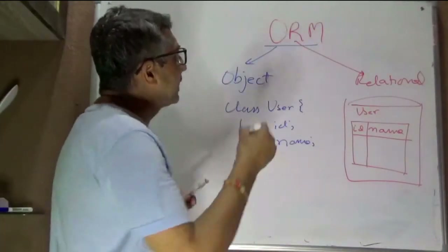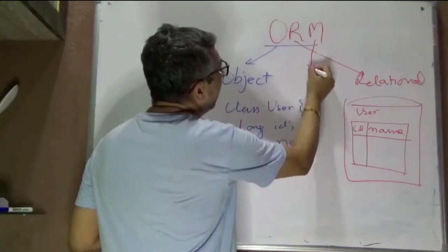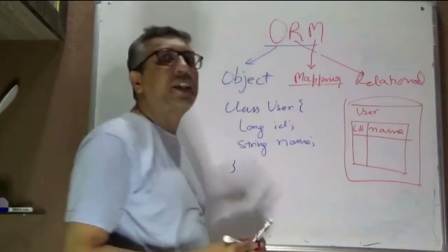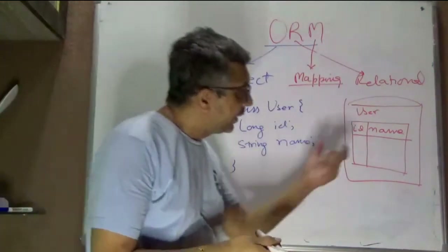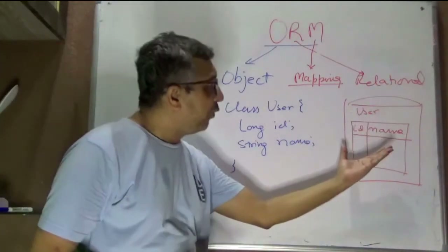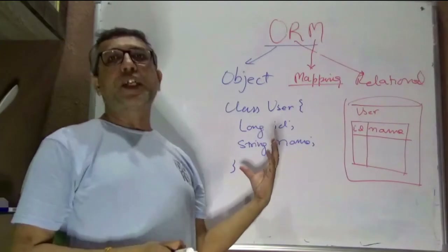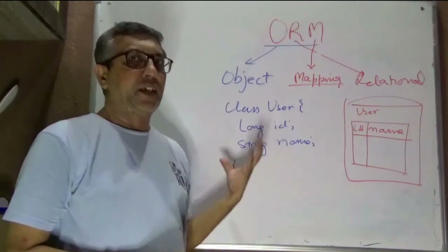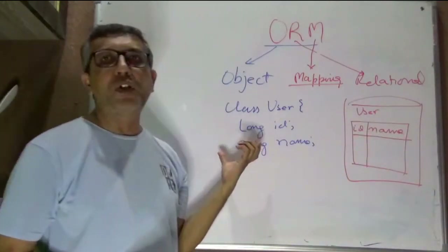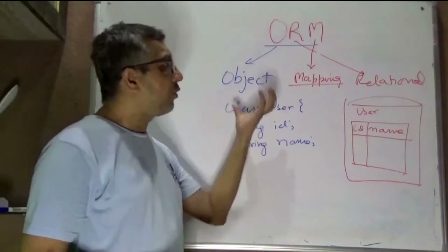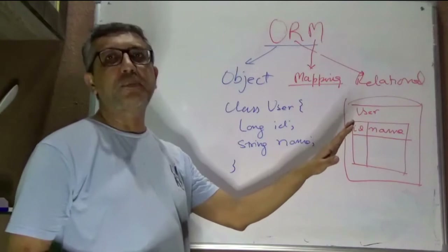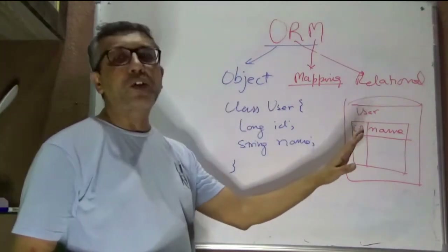What ORMs do is they help in mapping between the two worlds. The data sitting on the relational side in tables will be available to you on the object side as an object. So a row in the user table would be available as an object of type User, and you can do operations on it and persist or update it back to the database.